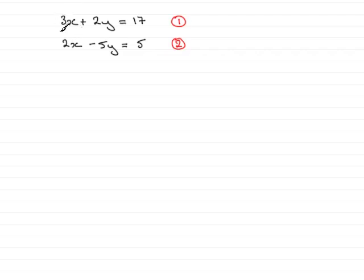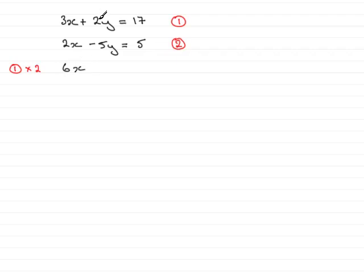We can bring this up to a 6x if we multiply both sides of equation 1 by 2. So I'm going to double both sides of the equation to keep the same balance. Doubling the left-hand side: 2 lots of 3x is 6x, 2 lots of 2y is plus 4y, and 2 lots of 17 is 34.